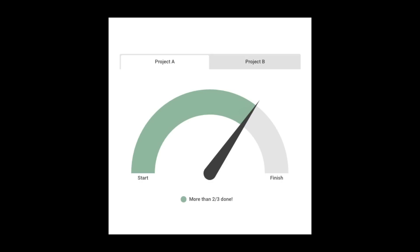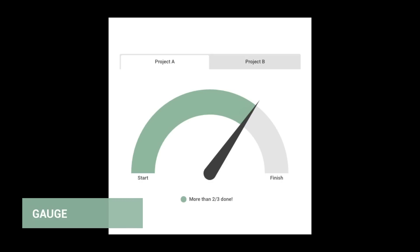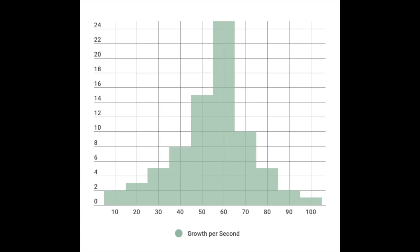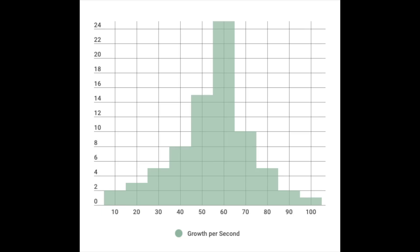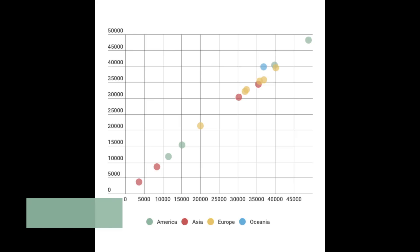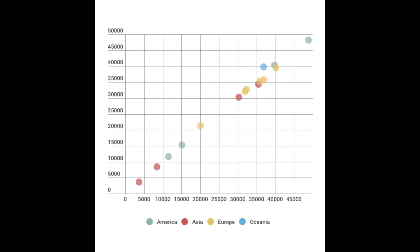If you want to just display progress, use a gauge chart. To show distribution from least to most common, this is where a histogram is used. Similarly, you can use a scatter to plot a large number of values against a second variable to display what the trend is.